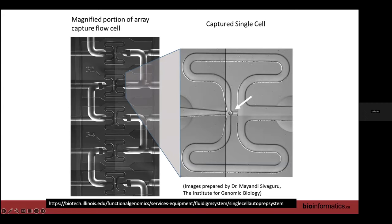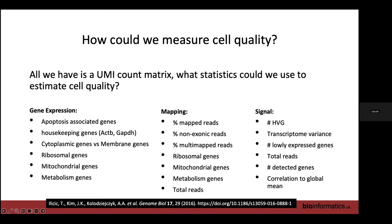A colleague named Thomas did this during my postdoc. He gathered a whole bunch of data, looked at all the cells, classified them as dead, damaged, or alive, then calculated every statistic he could think of: expression of apoptosis-related genes, housekeeping genes, cytoplasmic versus membrane genes, ribosomal genes, mitochondrial genes, metabolism, mapping statistics, variance of the transcriptome, number of lowly expressed genes, total reads, number of detected genes — everything.